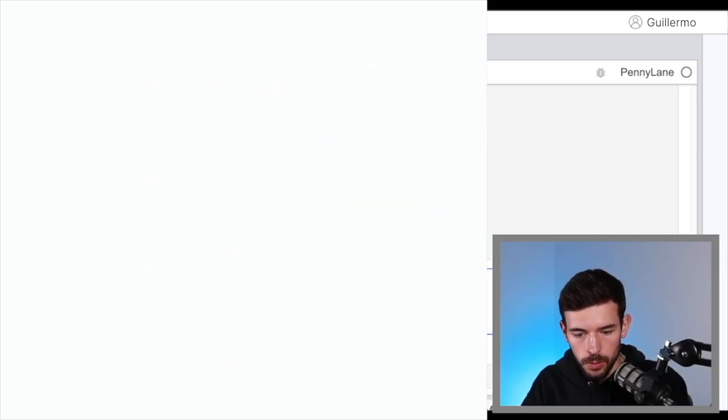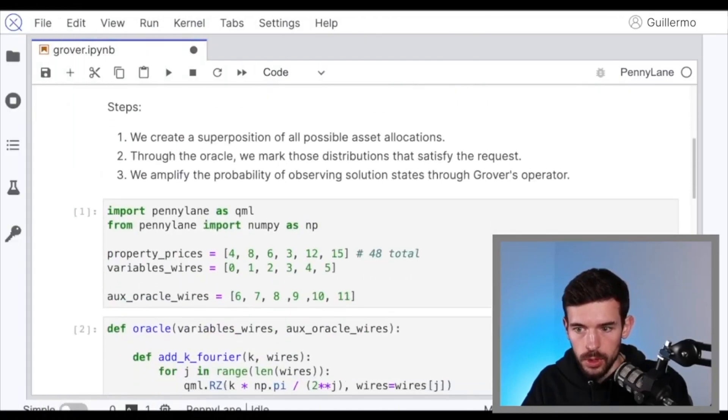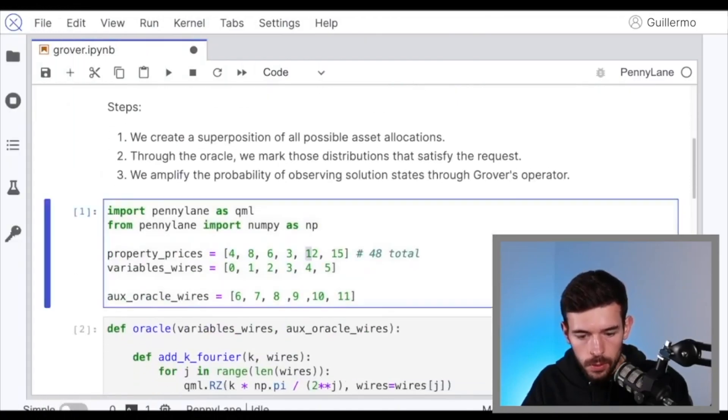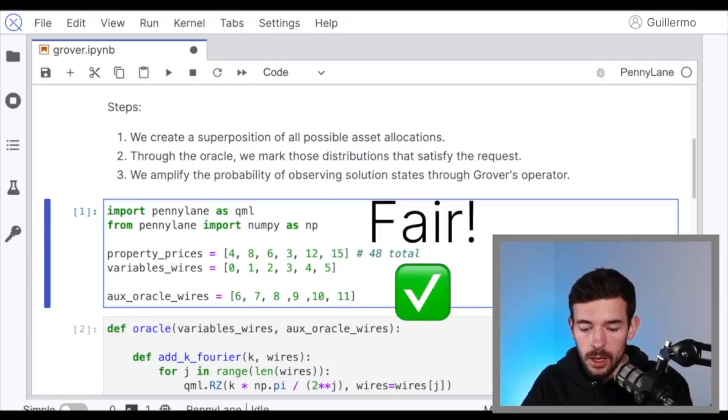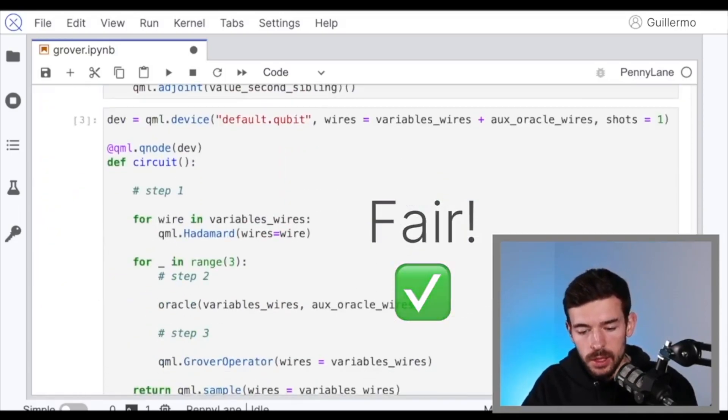So let's check it. We can go to these values. 4 plus 8 is 12, plus 12 is 24. On the other hand, 6 plus 3 is 9, plus 15 is 24. So thanks to this algorithm, we just found this perfect distribution.